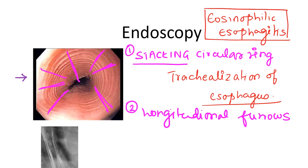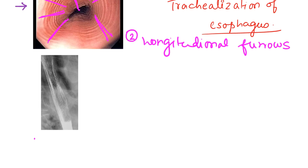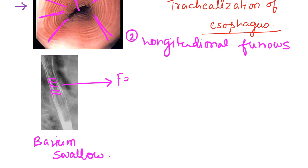If you perform a barium swallow in this patient, you get the same findings — circular rings shown in cross-section, like ridges. This appearance of the esophagus is normally seen in cats and related species; therefore this appearance is also called feline esophagus.